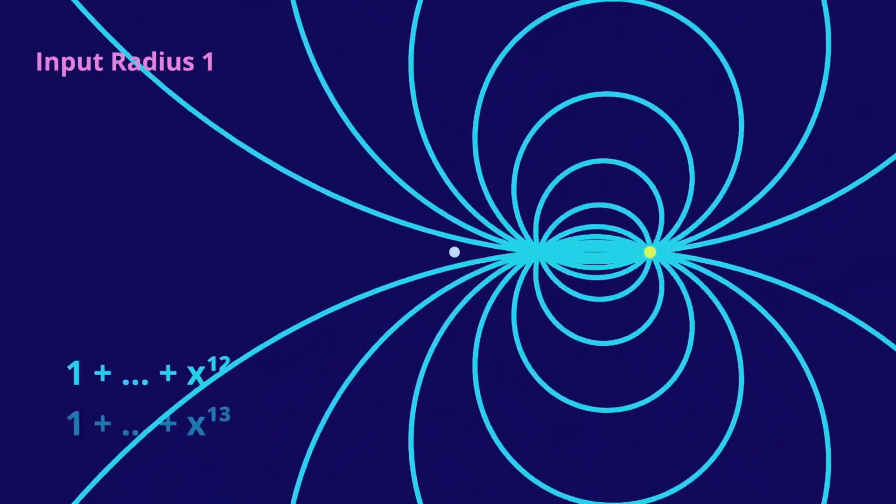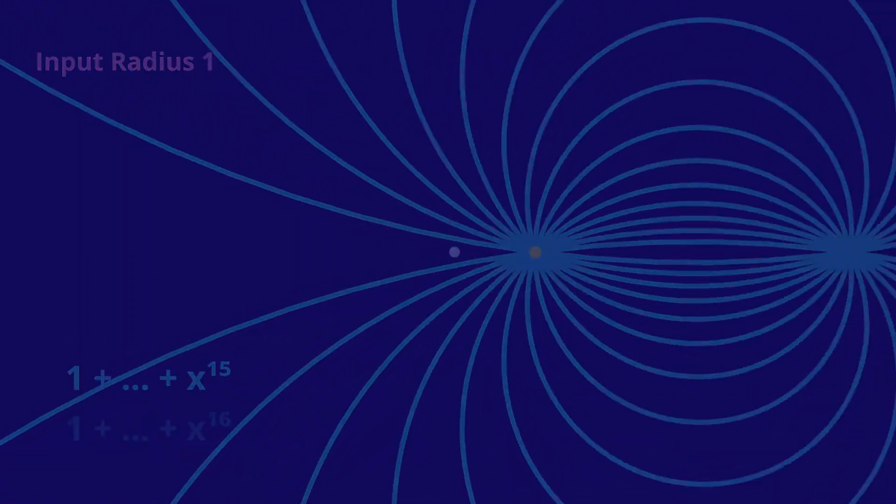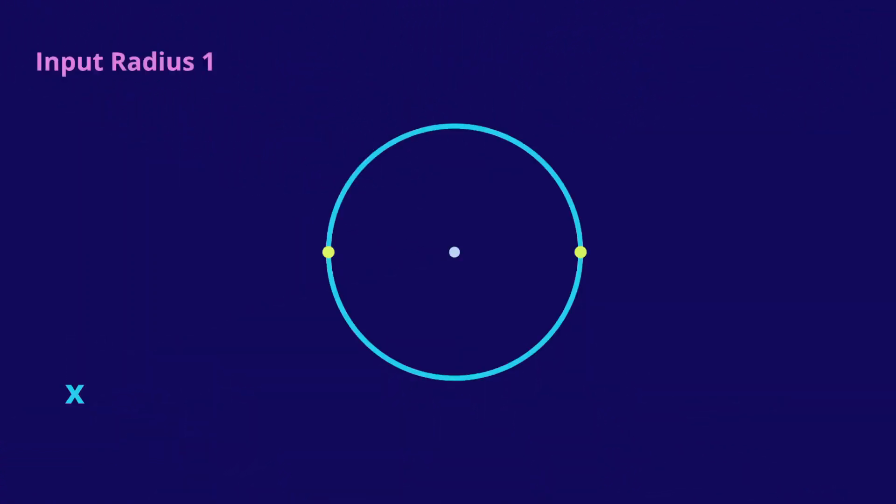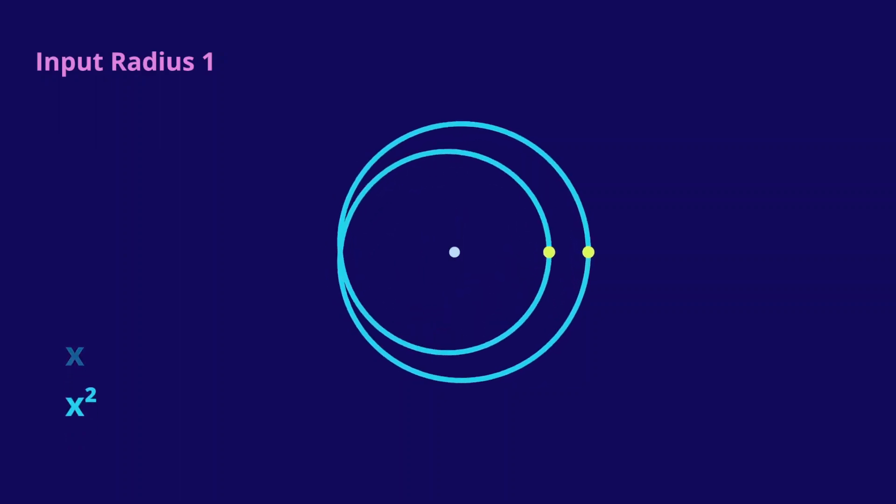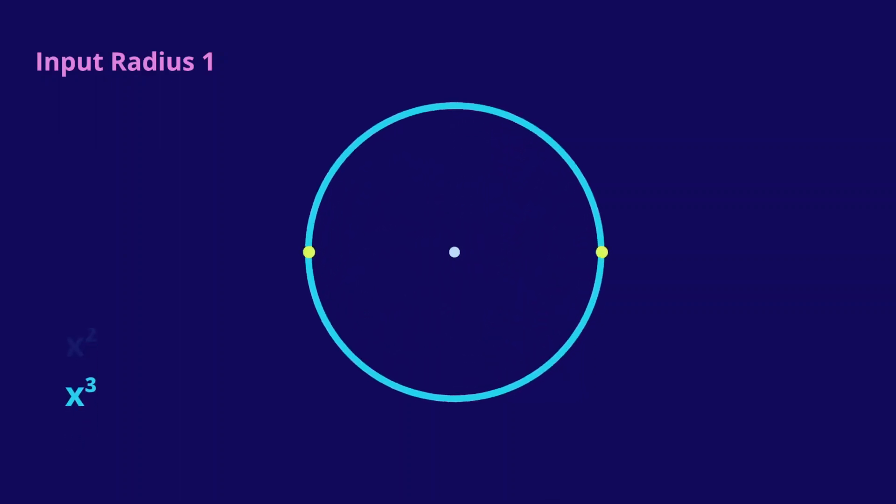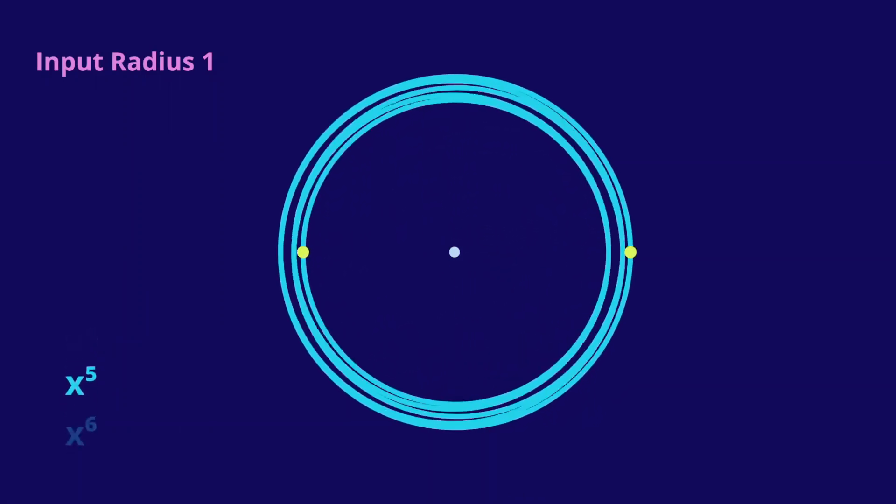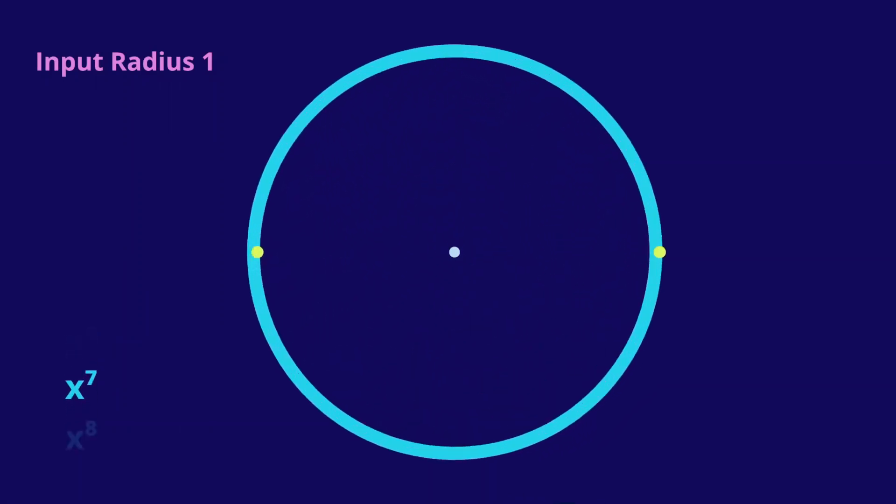To wrap things up, let's look at just powers of x. We'll go from x, to x squared, to x cubed, and continue. This one isn't a Maclaurin series, but I think it looks cool.